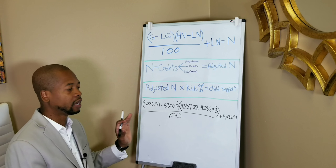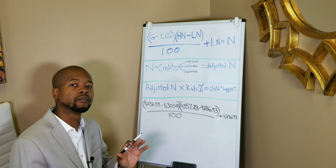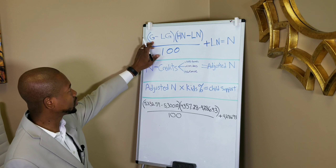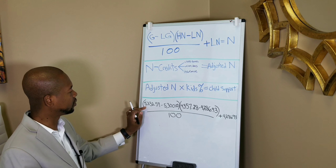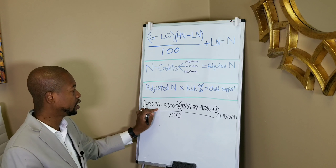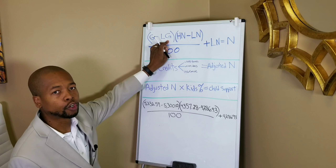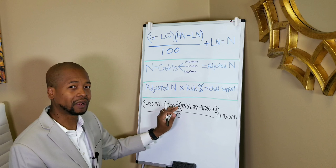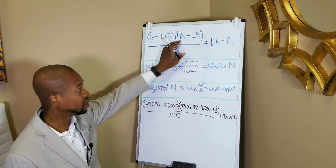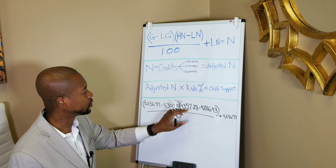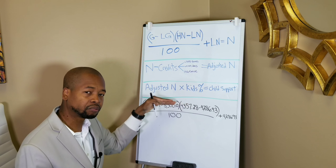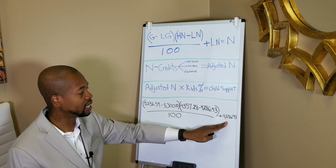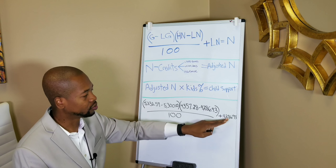We're back on the board to calculate child support based on numbers from the Attorney General's tax chart. Gross income is $5,332.59. We subtract the lower gross on the tax chart — $5,300 even — giving us $32.59. We then multiply that by the difference between the higher net and lower net on the tax chart. Once we calculate that difference, we multiply those two numbers together, divide by 100 (moving the decimal back two spaces), and add it to the lower net income of $4,286.93.